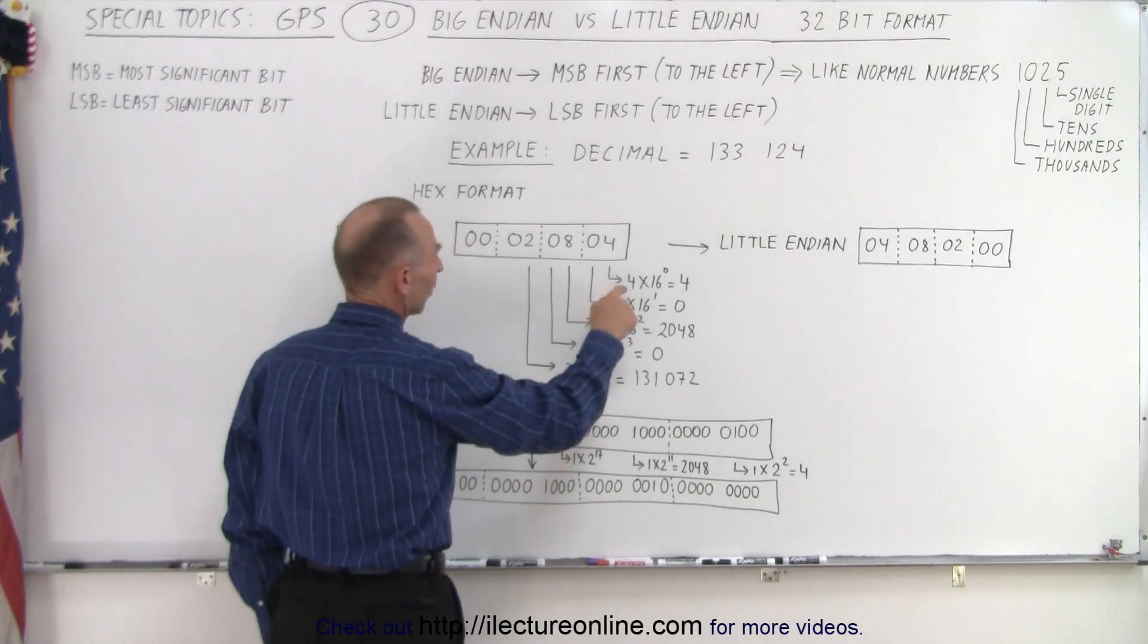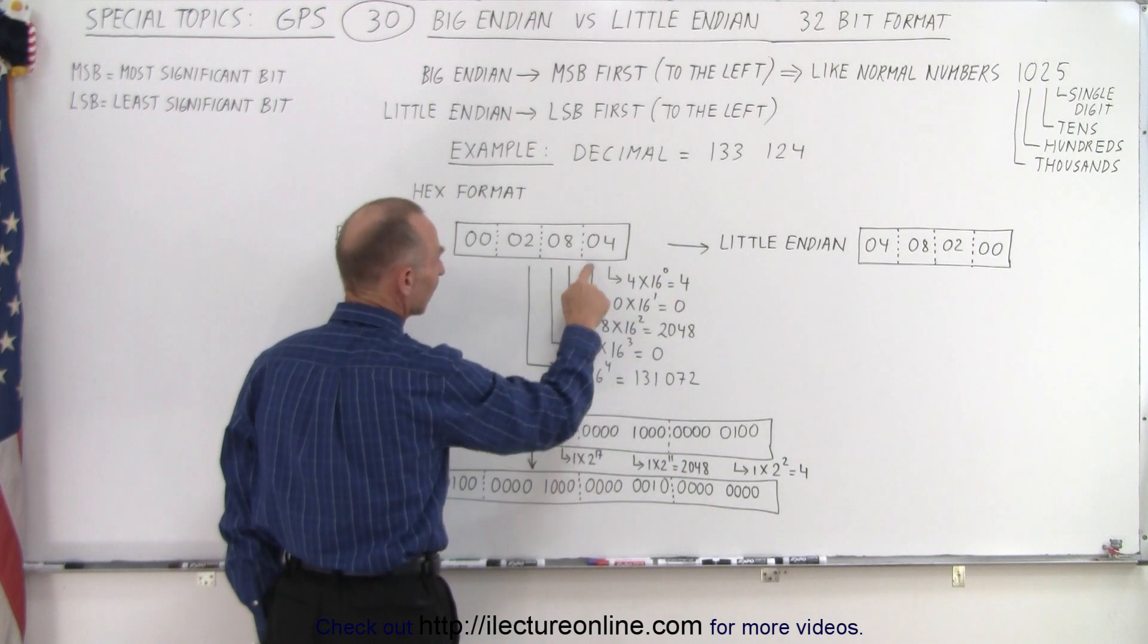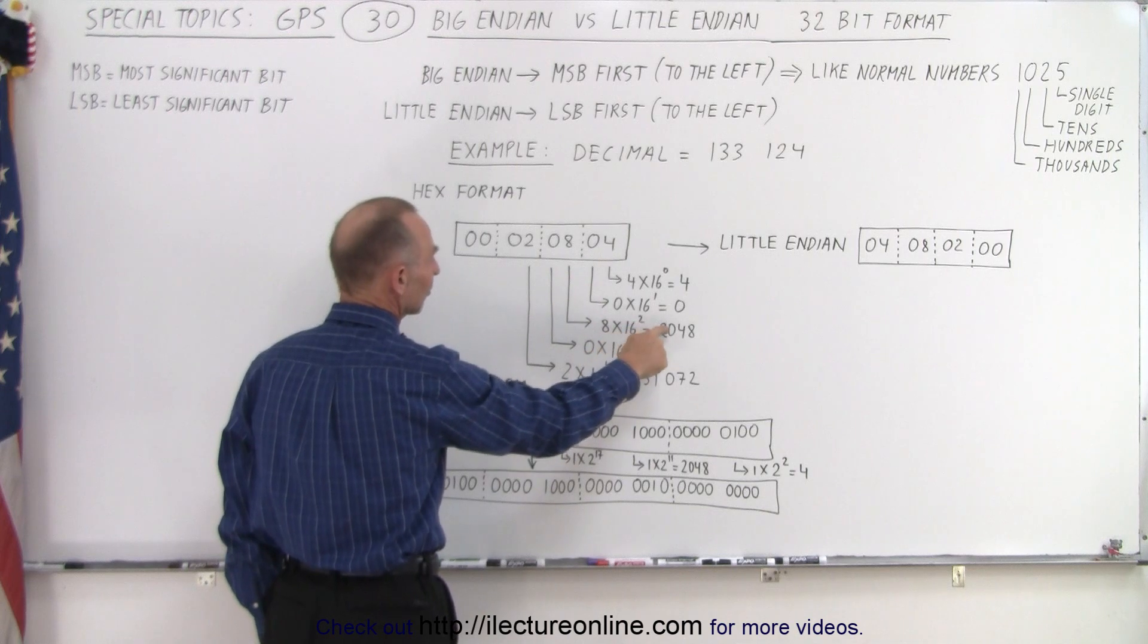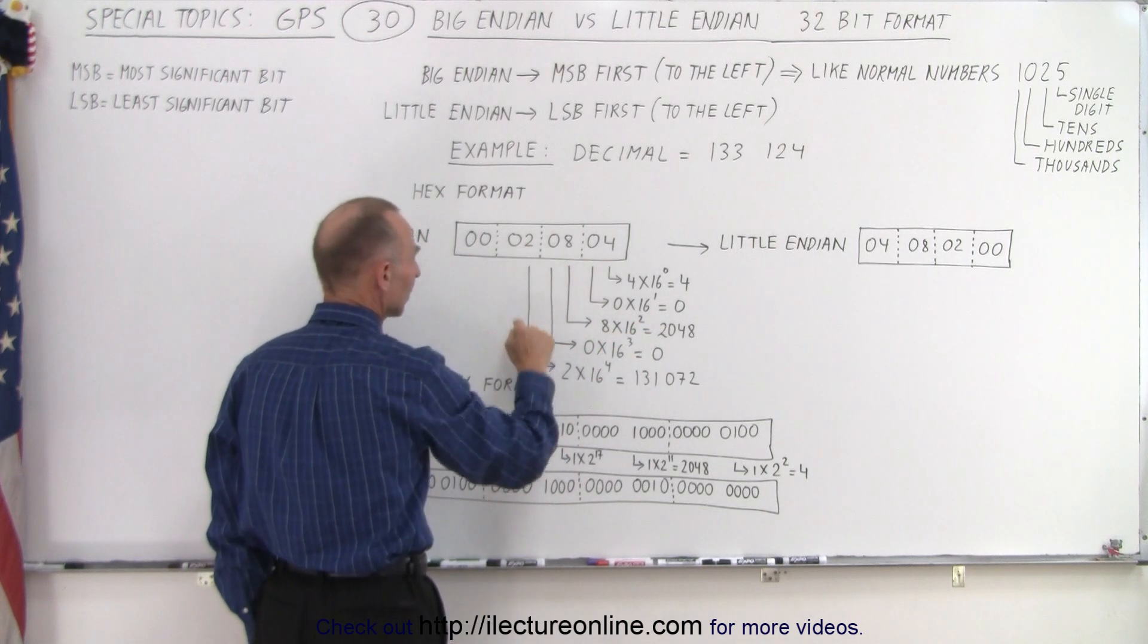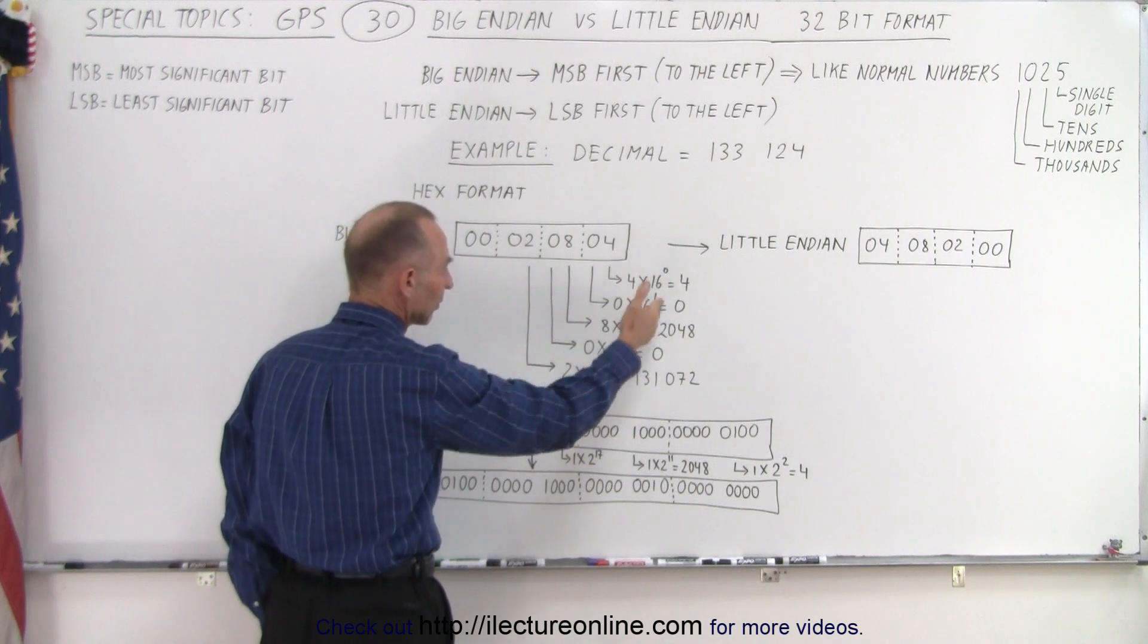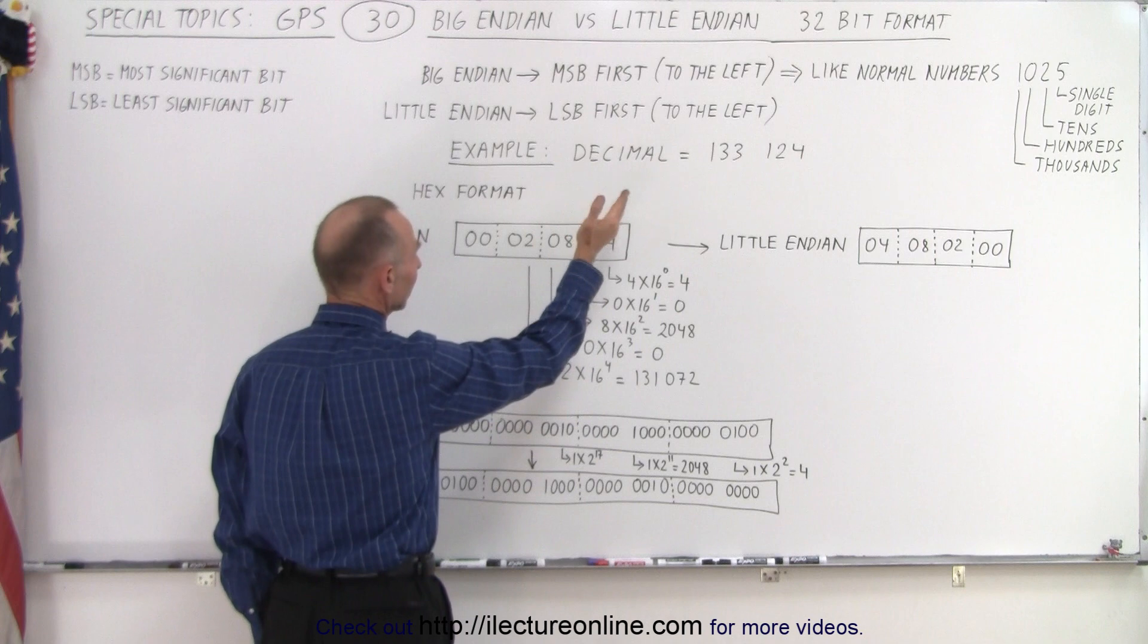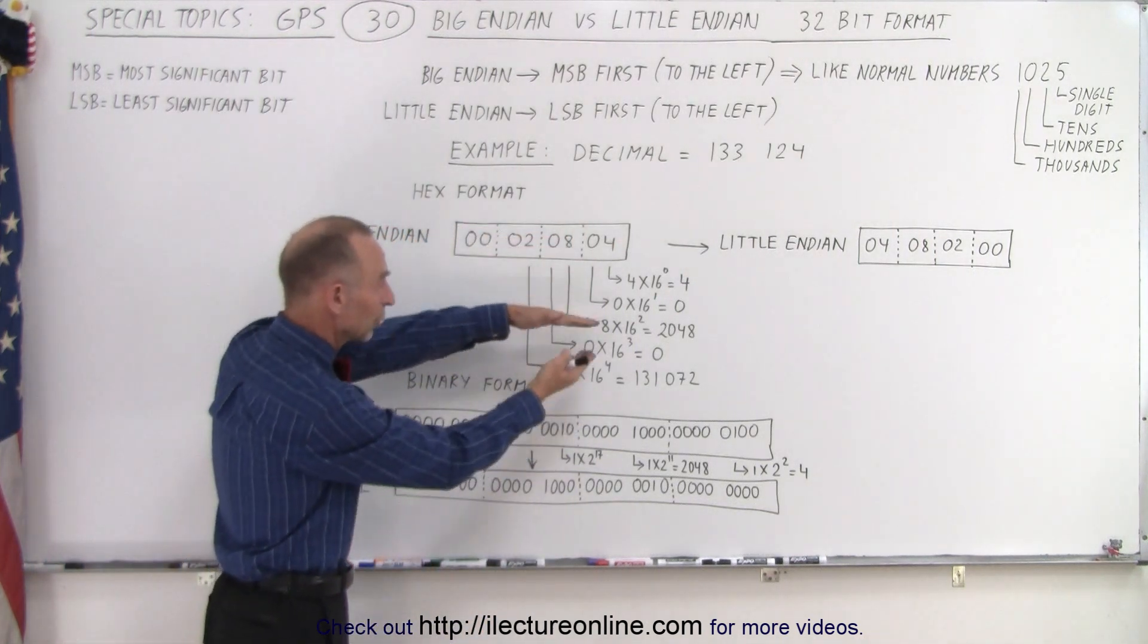Notice that this is 16 to the zero power times four which gives us four times one. Here we have zero times 16 to the first power, eight times 16 to the second power, zero times 16 to the third power and two times 16 to the fourth power and that's how these numbers end up in hex format and that's how we get the number 133,124 when we add all those together.